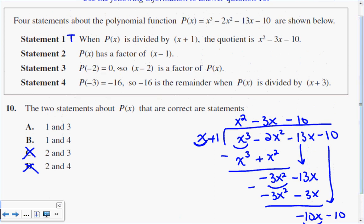Is p of negative 2, in fact, 0? So p of negative 2, replace your x values with negative 2, and we're going to see if this indeed is equal to 0.